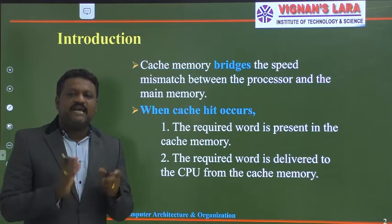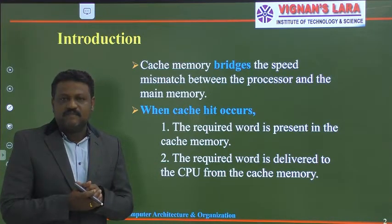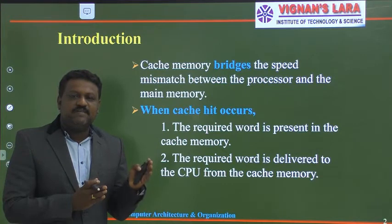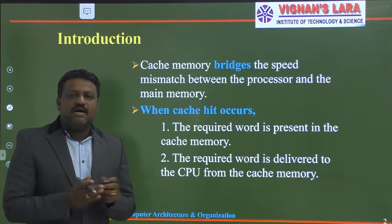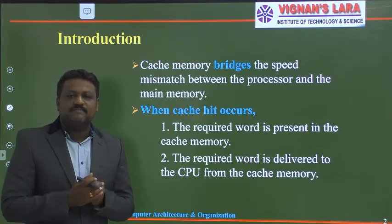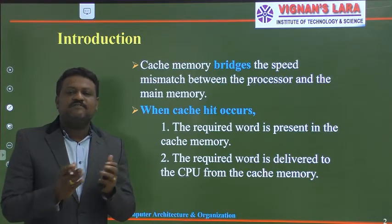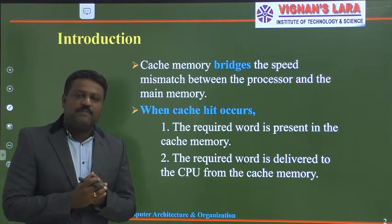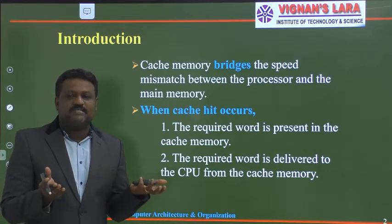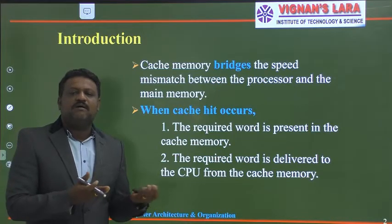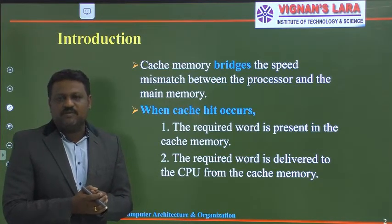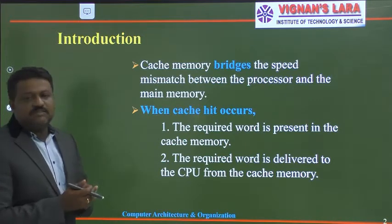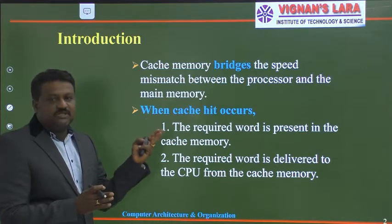Cache memories are smaller and faster memories. We place them either on the CPU or in between the CPU and main memory, so the CPU need not communicate with the main memory at all times. Whatever information the CPU wants, it asks the cache. If that information is available in the cache, the cache transfers it to the processor. The cache speed is more or less equivalent to the CPU, so valuable CPU time is not wasted. This is why cache memory bridges the speed mismatch between the processor and the main memory.